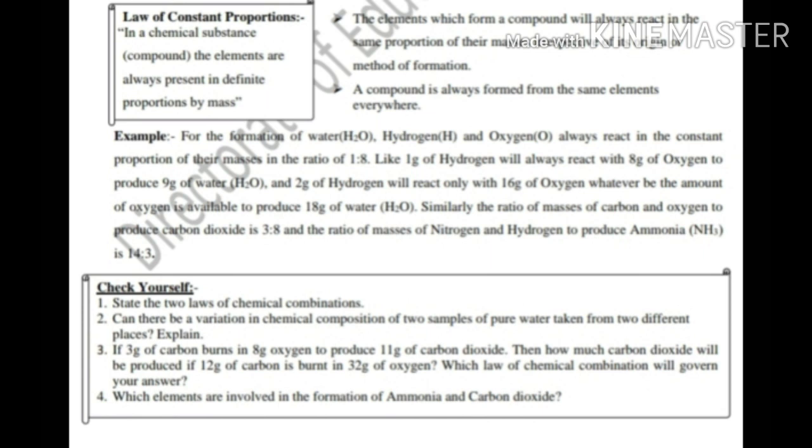And two grams of hydrogen will react only with 16 grams of oxygen, whatever be the amount of oxygen available, to produce 18 grams of water. Similarly, the ratio of masses of carbon and oxygen to produce carbon dioxide is 3 ratio 8, and the ratio of nitrogen and hydrogen to produce ammonia NH3 is 14 ratio 3.